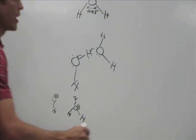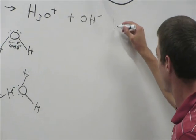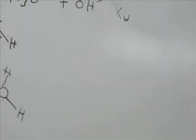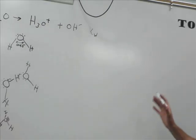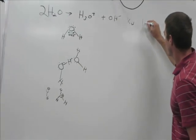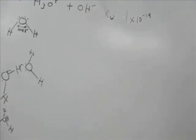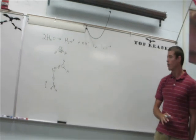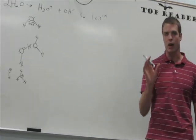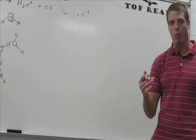This is called the self-ionization of water, and it has a constant — Kw, the ionic product of water — which is always 1×10⁻¹⁴ in solution. Now you're going to start understanding how electrolysis works, but first let's talk about ionized water and what that actually means.